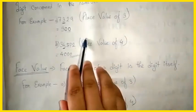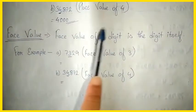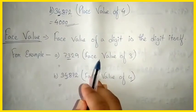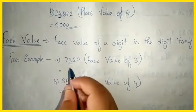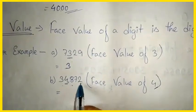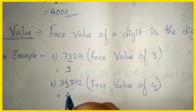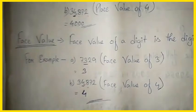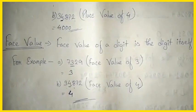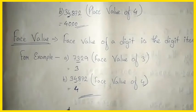Now let us learn about face value. The face value of a digit is the digit itself — it always remains the same. For example, in 7329 the face value of 3 is simply 3. In 34872 the face value of 4 is 4 itself. I hope you all have understood place value and face value. In the next video we are going to do the exercise.